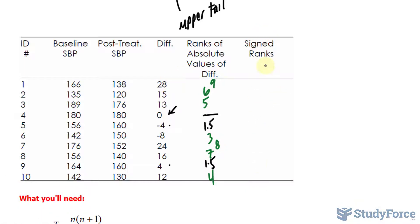In this last column, we rewrite these numbers except those that were negative in this column, the rank is also written in negative. So, we have 9, 6, 5, negative 1.5, negative 3, 8, 7, 1.5, and 4.